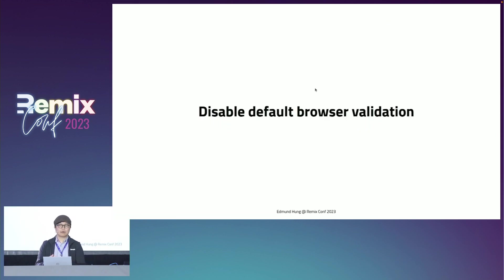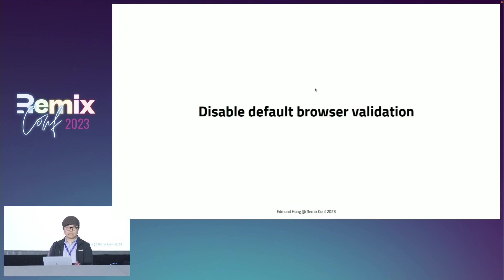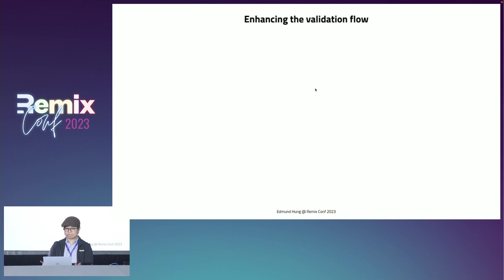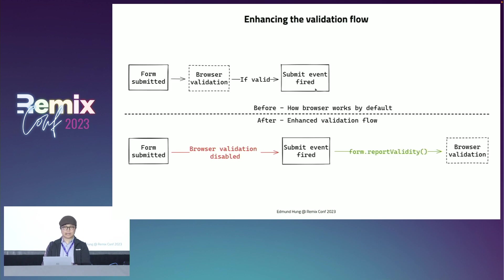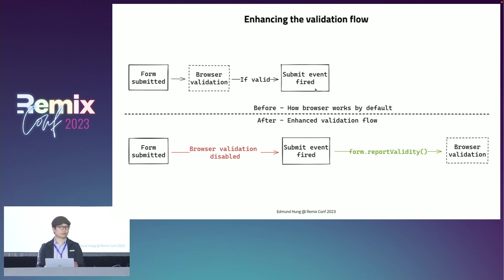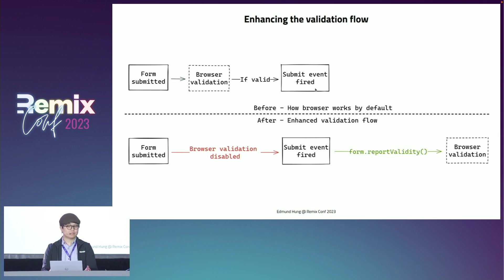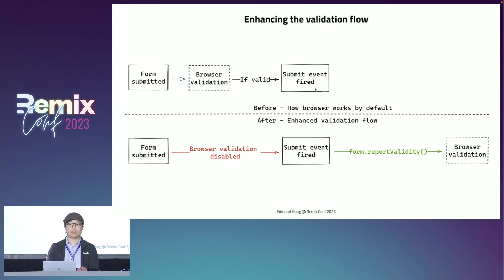Now I'm going to show you how we can progressively enhance it using DOM APIs. The first step is to disable the default browser validation. Let's take a look at the validation flow. The top diagram shows how the browser works by default: when the form is submitted, the browser fires the submit event only if the form is valid.